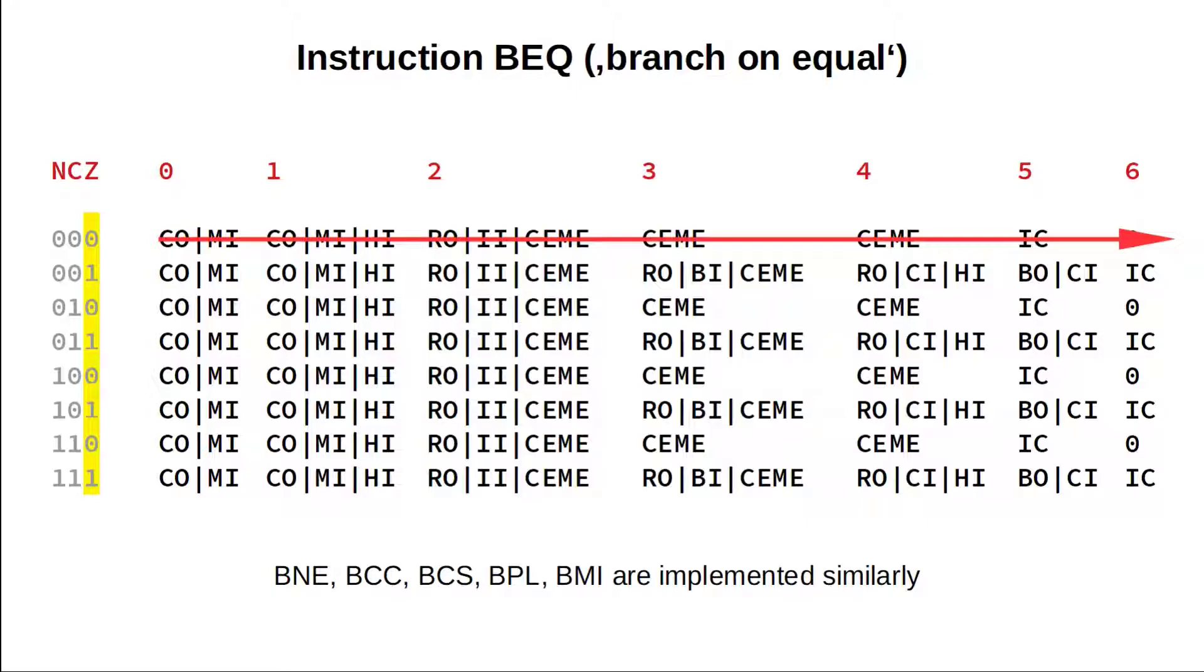For Z equals zero, we do not want the control logic to branch to the address following the BEQ opcode in memory. Thus, we simply increment the program counter twice with count enable, memory enable and end the instruction. But if Z equals one, BEQ should behave exactly like a jump-to-address instruction, JPA, we have already discussed. So that's really all there is to conditional branches.